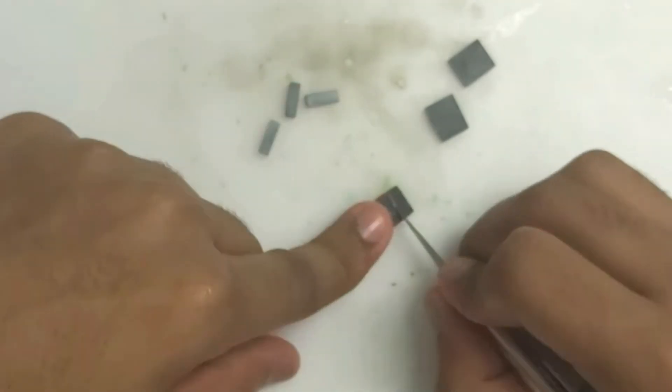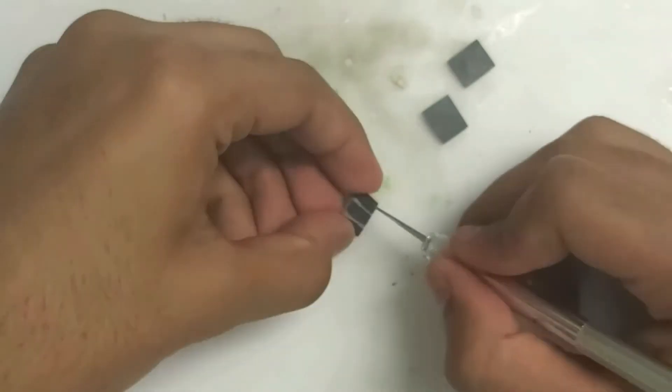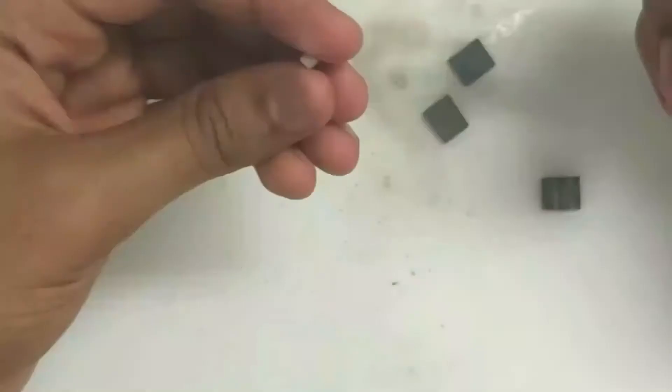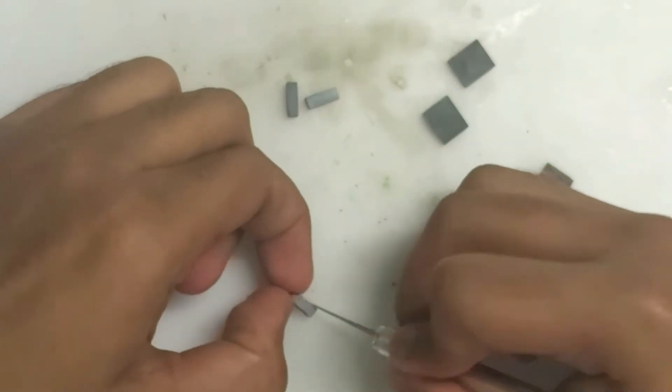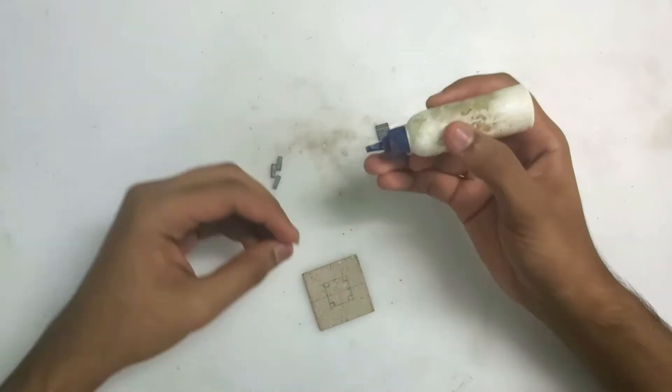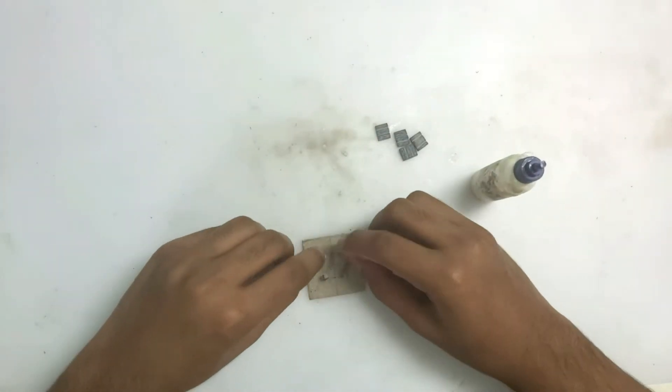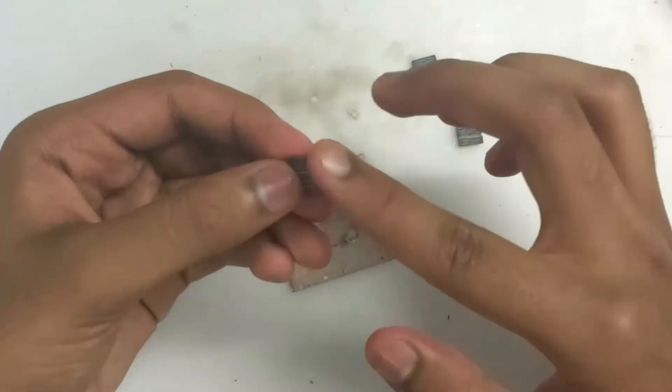As you can see, now the same thing for the pillars. You just need to draw cracks on it and nothing else should be done. You have to repeat this and then you have such four pieces each. Now stick the pillars first with white glue.